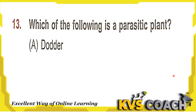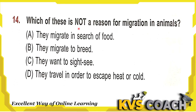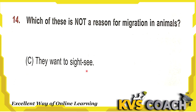Venus flytrap is an insectivorous plant and cactus is an arid-region plant. So the right answer is option A — dodder. Next question: which of these is not a reason for migration in animals? They migrate in search of food — correct. They migrate to breed — correct. They want to sightsee — no, animals do not migrate for sightseeing. They travel to escape heat or cold — correct. So the right answer — the incorrect reason — is that they want to sightsee.